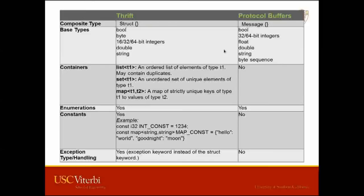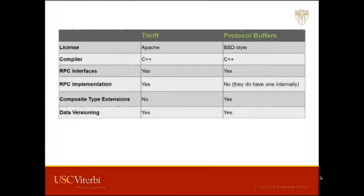Here's a feature comparison between the two. The base types are pretty similar, with a few differences. Protobuf supports raw byte sequences, whereas Thrift addresses that as strings, individual bytes, or a list of bytes. Thrift also has containers — ordered lists, sets, and maps — which Protobuf does not have. Both support enumerations. Only Thrift supports constants you can declare in your IDL, and Thrift also supports exceptions while Protobuf does not.